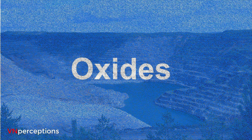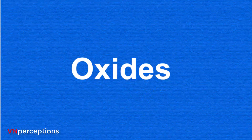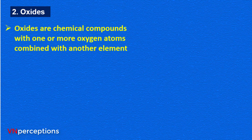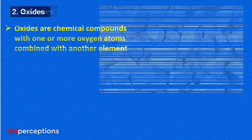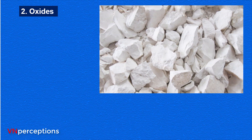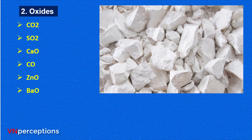Then come the oxides. Oxides are chemical compounds with one or more oxygen atoms combined with another element, and are called binary compounds of oxygen. Examples of oxides include carbon dioxide, sulphur dioxide, calcium oxide, carbon monoxide, zinc oxide, barium oxide, and water.